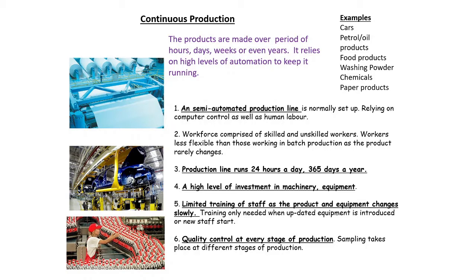Continuous production is semi-automated with machinery involved throughout. There's a mixture of skilled and unskilled workers depending on the task, and a high level of investment similar to mass production. Quality control checks happen at every step to ensure that, when making thousands of the same product, they're all made correctly. Products made this way include certain cars, car parts, petrol or oil products, food products, paper products, washing powder, chemicals, and items like biros.